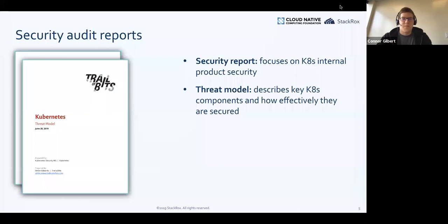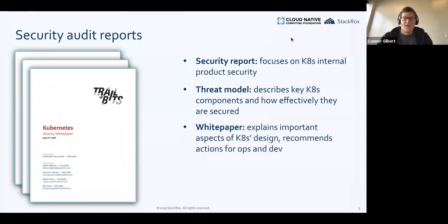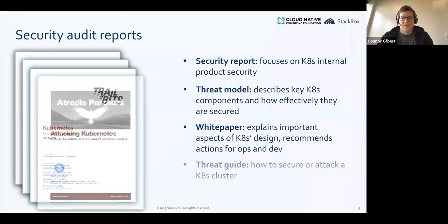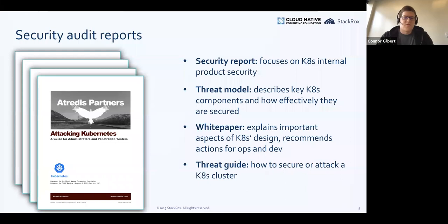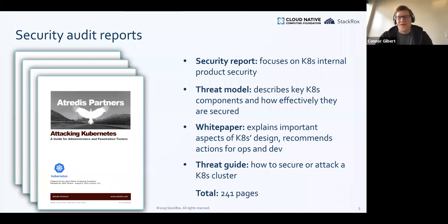Beyond the security report, there were three other documents. The next is a threat model, which describes key components of Kubernetes and how effectively they're secured, applying a structured approach to analyzing the system as a whole. There's also a white paper explaining important aspects of how Kubernetes is designed, recommending actions for operators, developers, and security people. And the last one is an attacking guide — a threat guide that covers how to secure or attack a Kubernetes cluster with a penetration-tester, red-blue-team kind of vibe. Four big documents, a total of 241 pages.